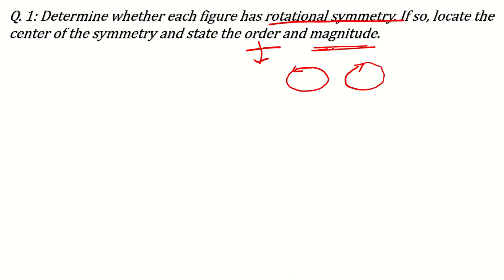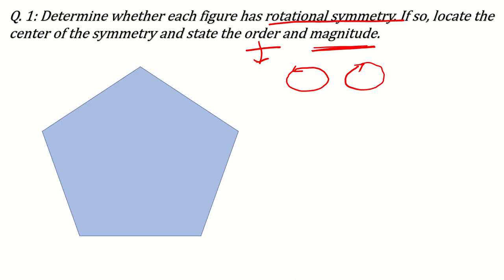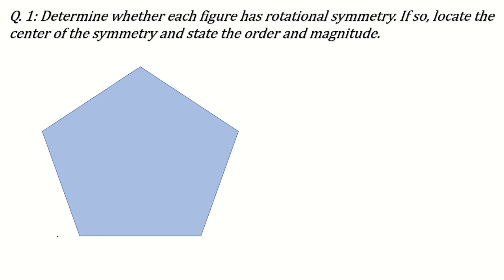The magnitude means the angle at which the figure overlaps itself. With the help of an example we will discuss these things in detail. For example, the question can be: what is the rotational symmetry of this regular pentagon? The figure should be a regular pentagon because all sides must be equal for it to be overlapped.